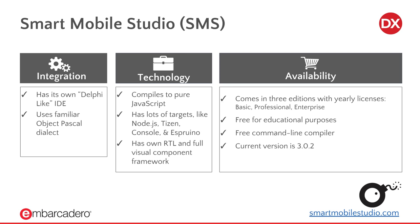Smart Mobile Studio is another big player in this space. They use DWScript but have expanded quite a bit beyond standard Delphi compatibility, adding a lot of new features to the language. You write in Object Pascal and it compiles into JavaScript. They have their own IDE, lots of components, and their own RTL. They can compile to a web page rendered in your browser, and also have targets for Node.js for server backend, Tizen, console applications, Espruino for Arduino, and more. It comes in basic, professional, and enterprise versions — free command line compiler and free for educational purposes — at smartmobilestudio.com.